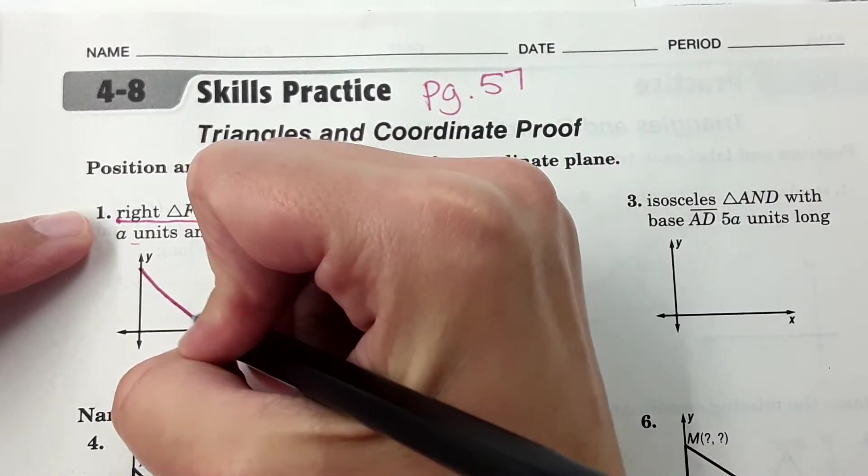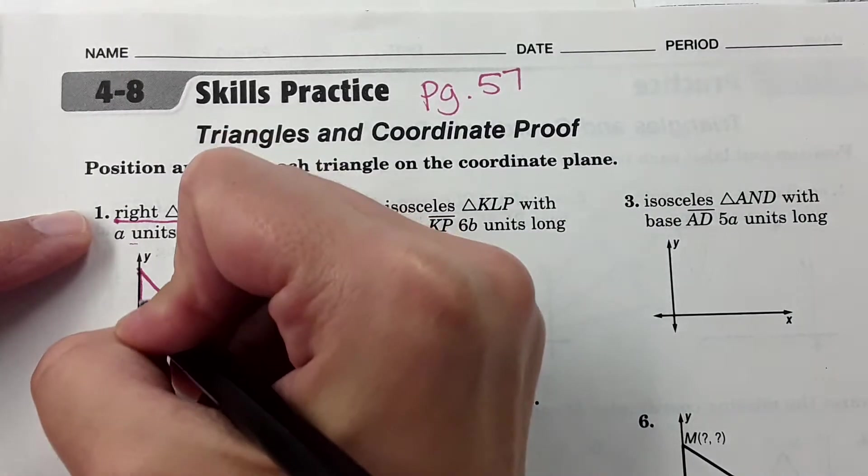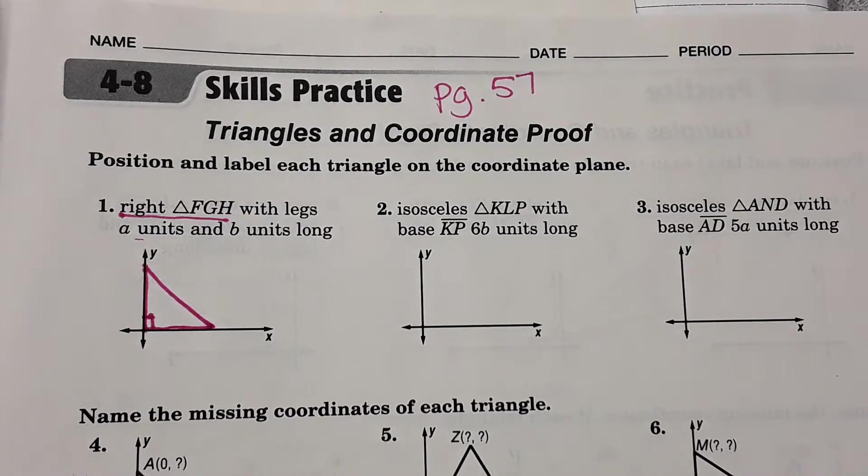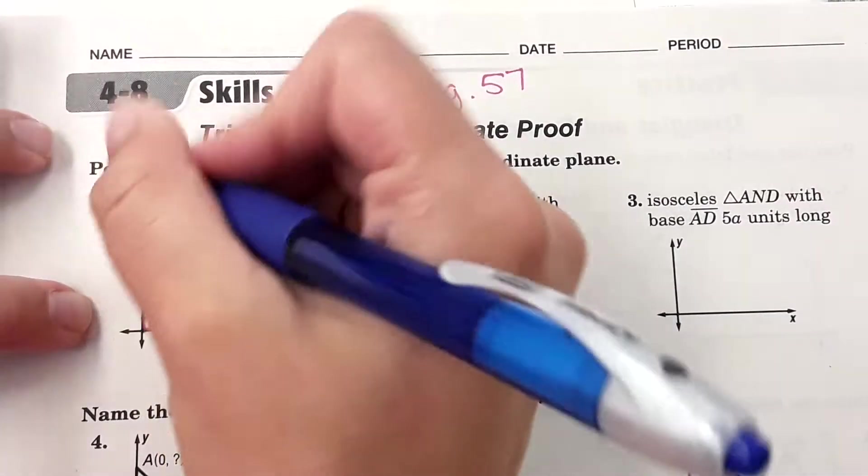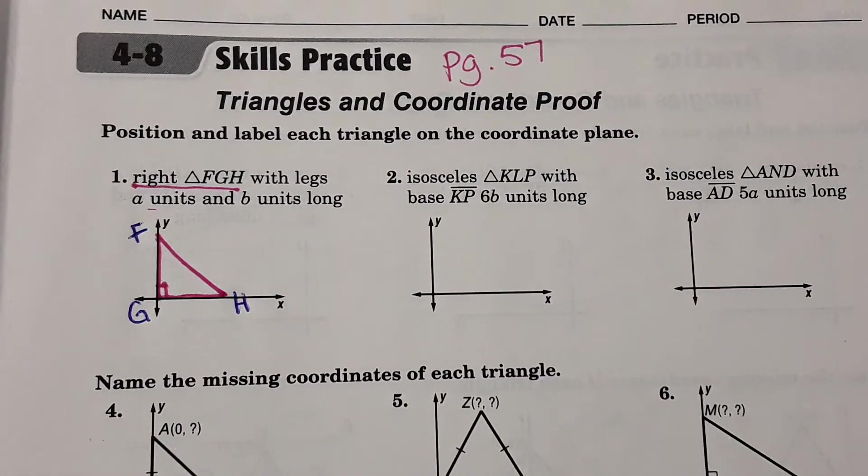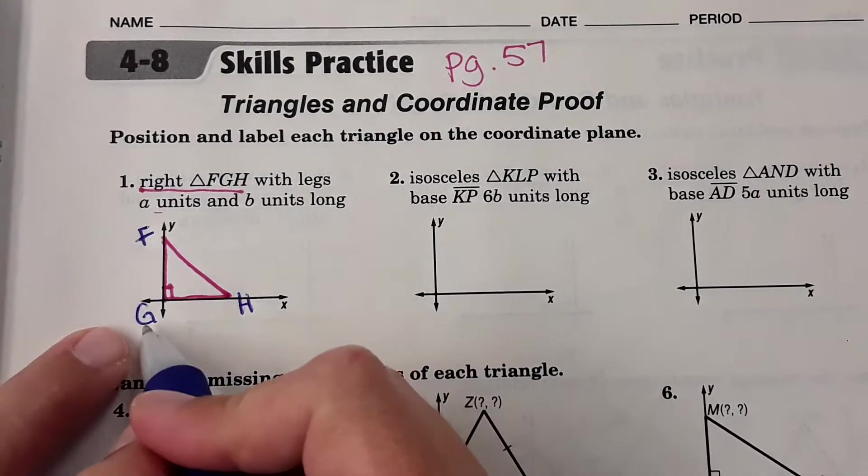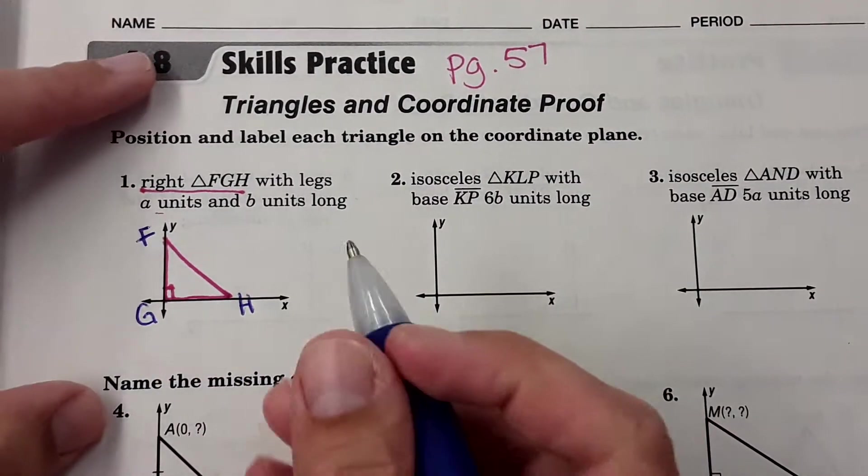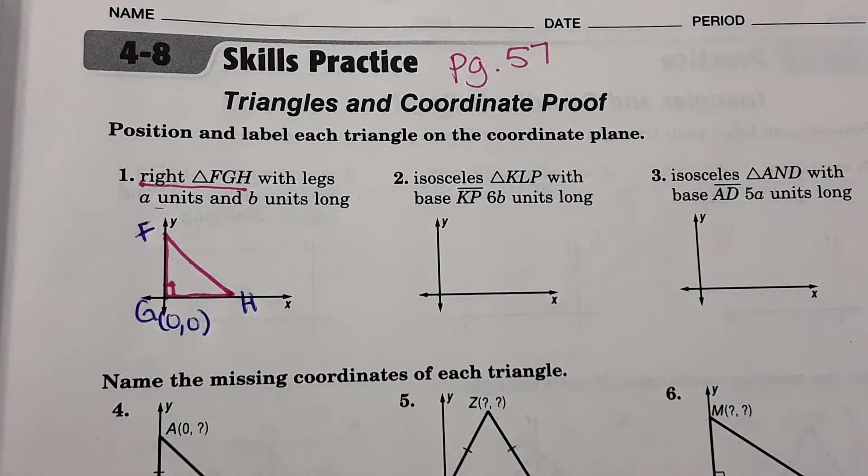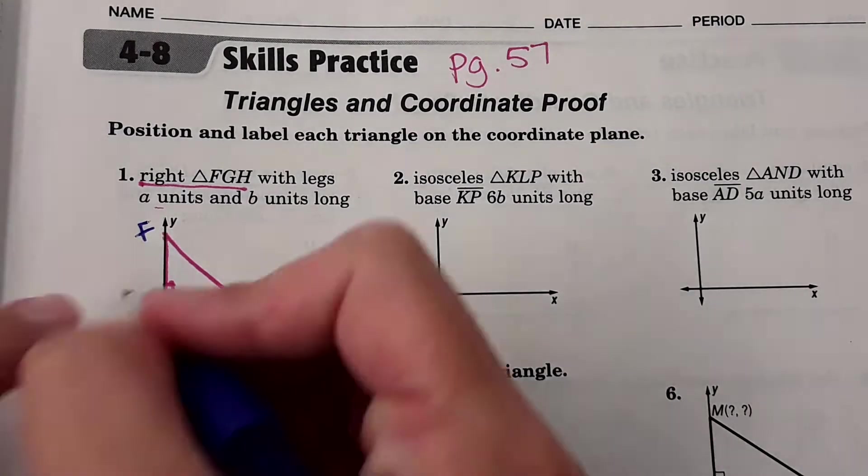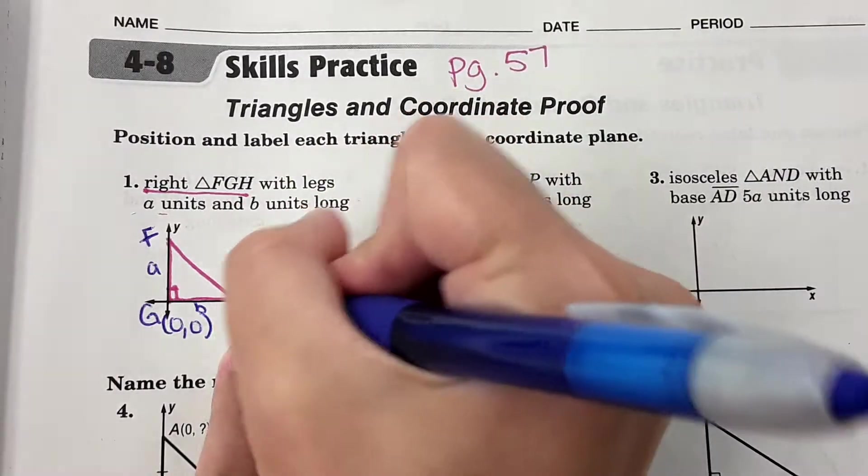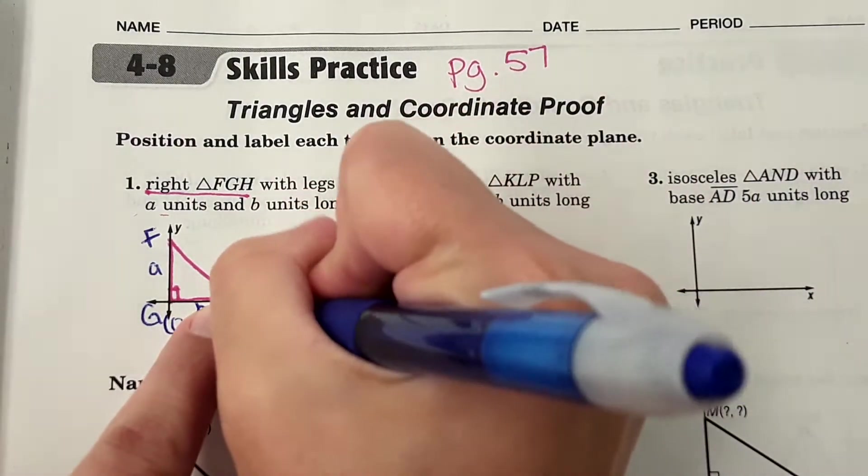So here it says right triangle FGH with legs a units and b units long. So how we're going to draw this is like this. Here is our triangle, it is a right triangle. It says it is FGH. So FGH. And so our goal here is to find the coordinates for all three of these points. G is at the origin, so the point is just zero zero.